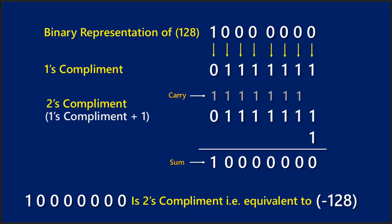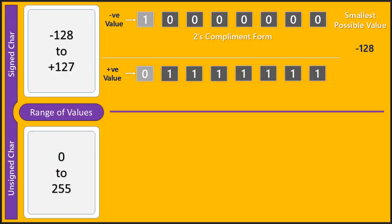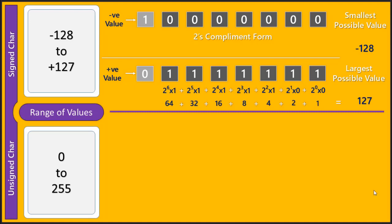Continuing the discussion on range of values: -128 in a signed char is in 2's complement form. All negative values are represented using 2's complement form, whereas all positive values are represented in binary form. To calculate the largest possible value in signed char, set all 7 data bits to 1; calculating the magnitude gives 127.